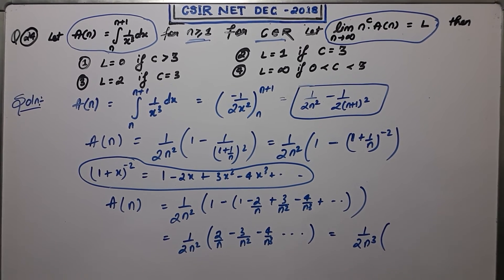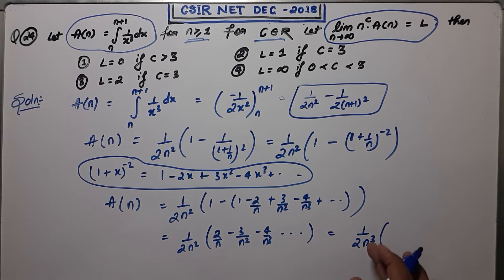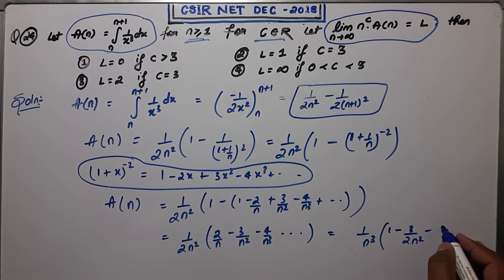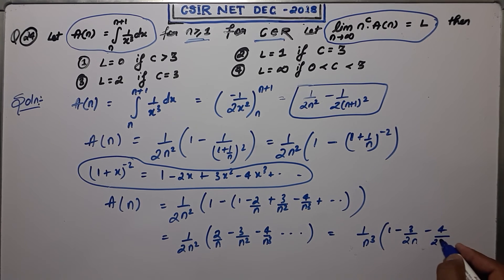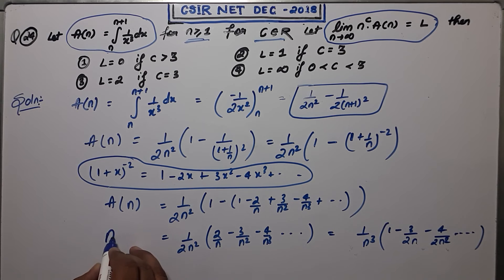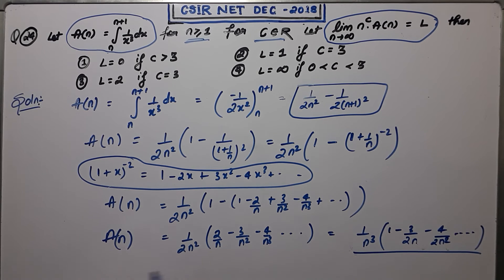Simplifying further, a_n equals 1/n³ times [1 - 3/(2n) - ...]. So your final form of a_n is approximately 1/n³ multiplied by a series whose leading term is 1.